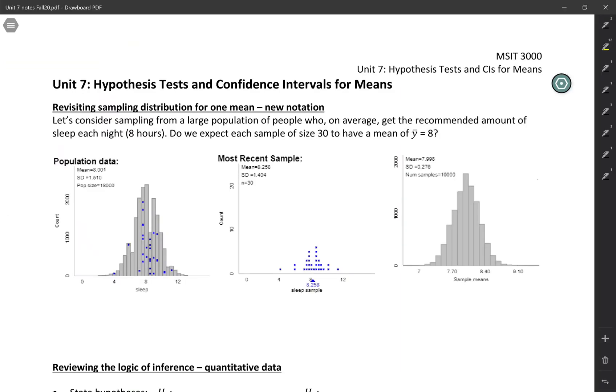So starting with the population, we have numbers that describe the population. Those numbers are called parameters. So you can sort of remember population and parameter both start with P. So parameters are just numbers that describe the population. So we have two here. We have the population mean. And I'm going to use a new symbol for the population mean. I'm going to use mu for that. So the population mean here is 8.001 hours.